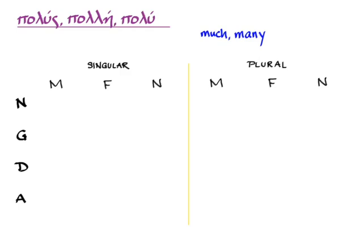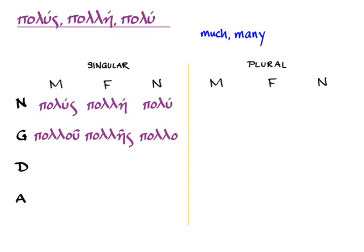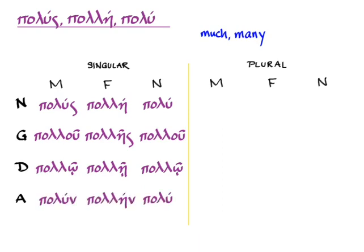In the singular nominative: polus, pole, polu. Genitive: polu, polēs, polu. Dative: pollō, pollē, pollō. And in the accusative singular: polun, pollē, polu. There is no vocative.